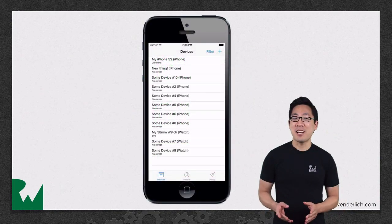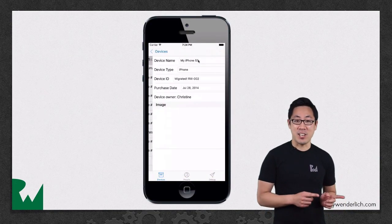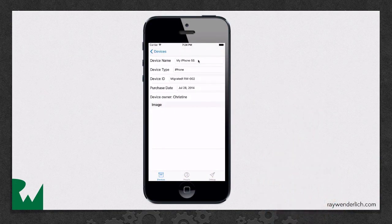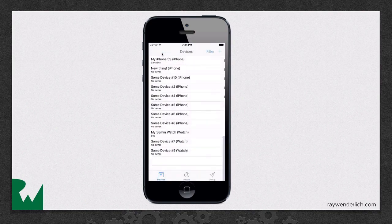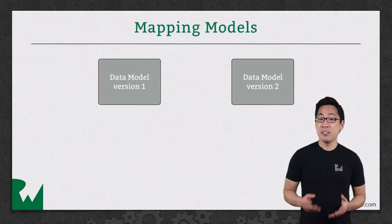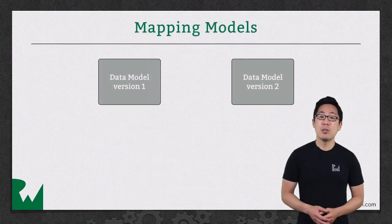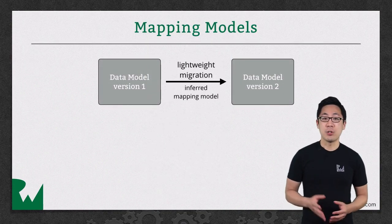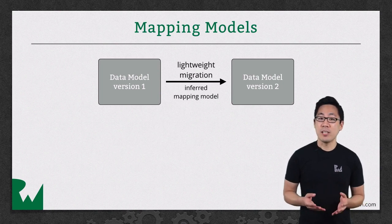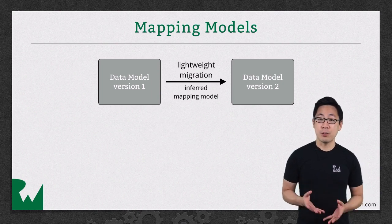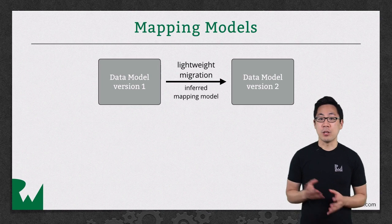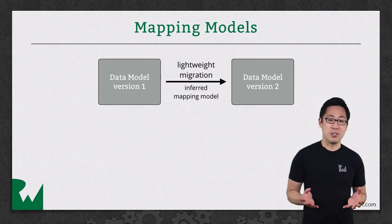Here's what the app will look like by the end of this video and challenge. You'll have refactored the device type into a separate entity with a relationship to a device entity. In the beginner series, we looked at lightweight migrations, where you make simple changes to your data model and Core Data can infer the changes required to go from the old to the new.